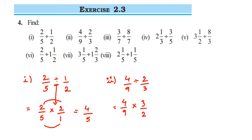So 2 ones are 2, 2 twos are 4; 3 and 9 cancel — 3 ones are 3, 3 threes are 9. We are left with 2 by 3, and that is the answer.